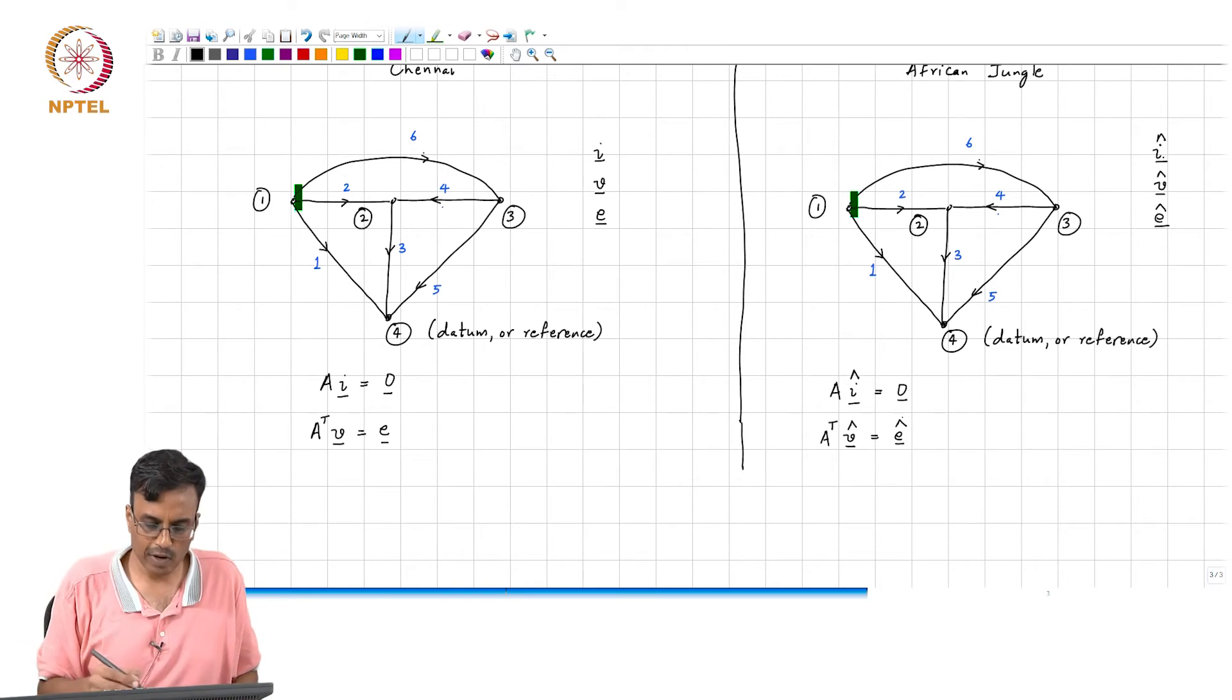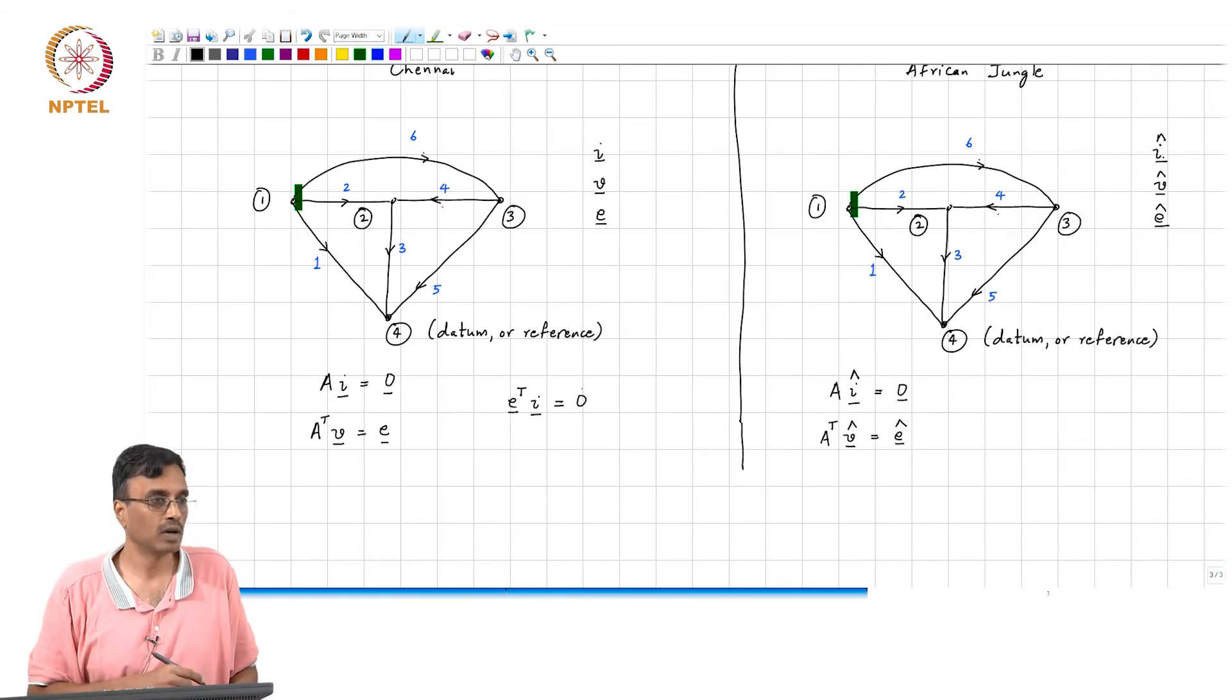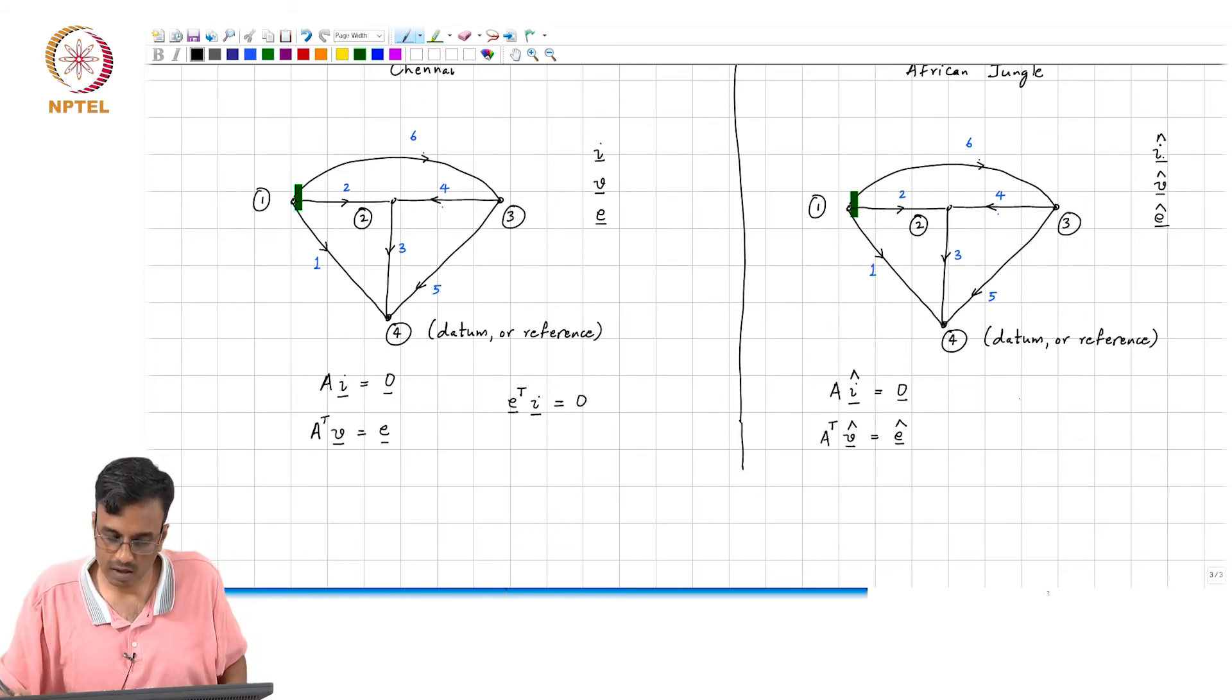And we know obviously, that E transpose times I hat must also be equal to 0. And of course, E hat transpose times I hat must also be equal to 0.